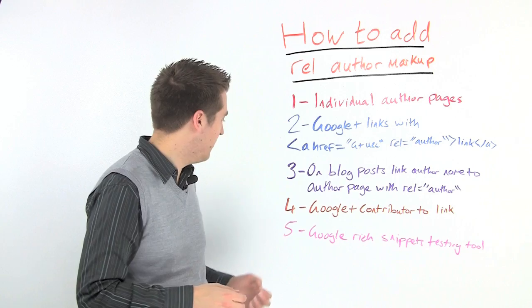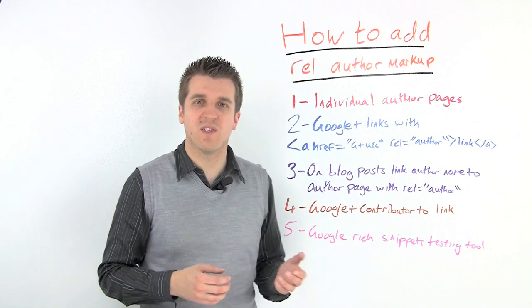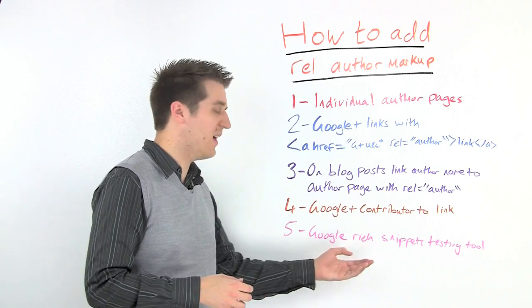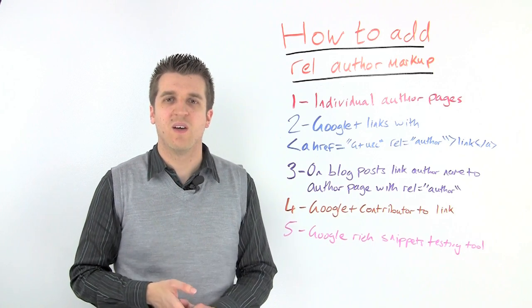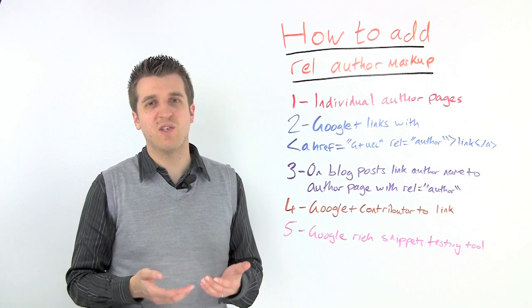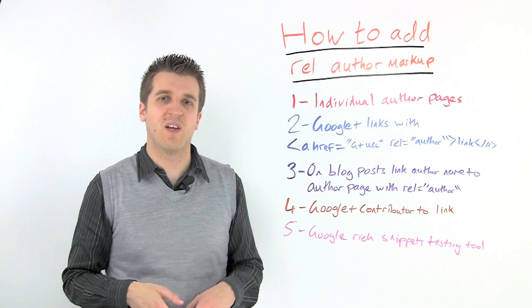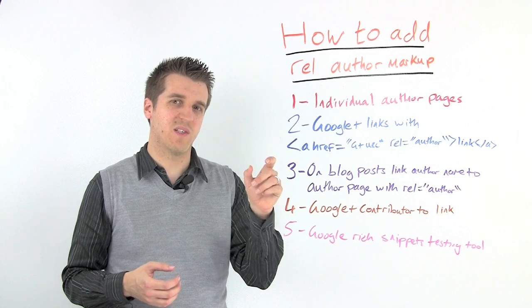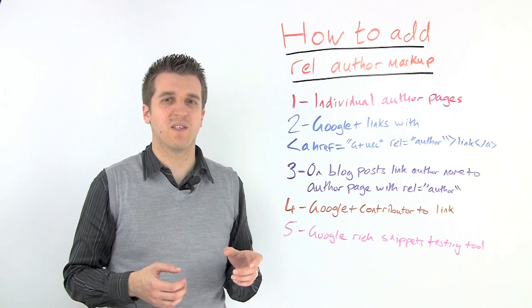Once that's done, they can hit save, and then you go to the Google Rich Snippet Testing Tool, and if you search for that, then it will come up. Put in the URL of one person's blog post, and it will actually show you how the result should look, and if it looks wrong, Google will actually say, this part of the process is wrong, here's how to fix it.